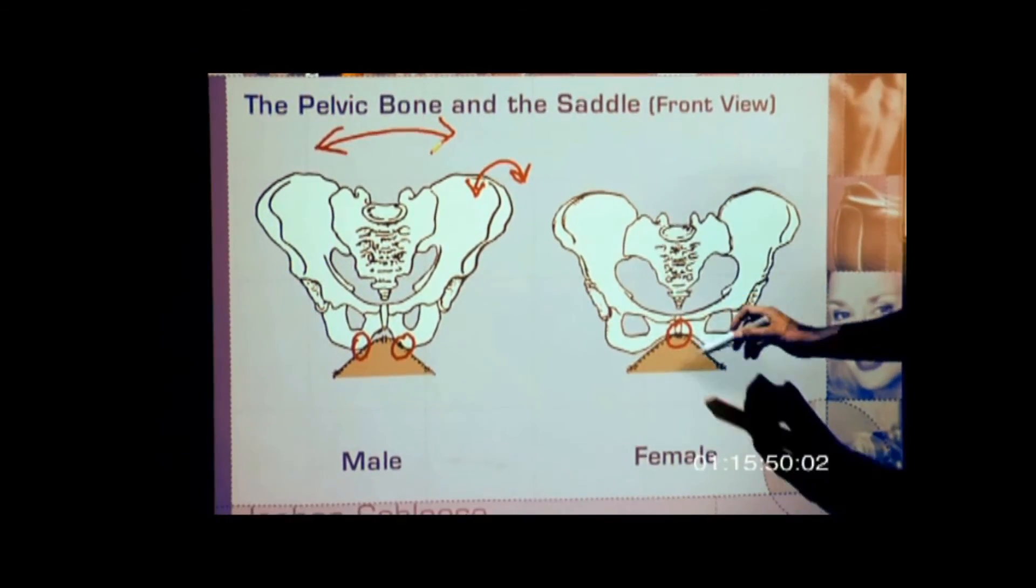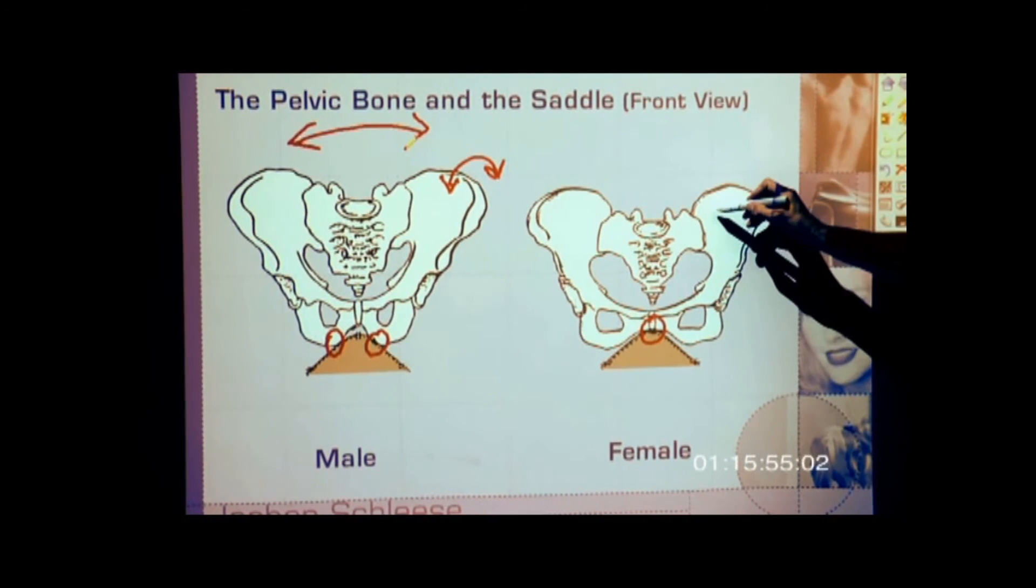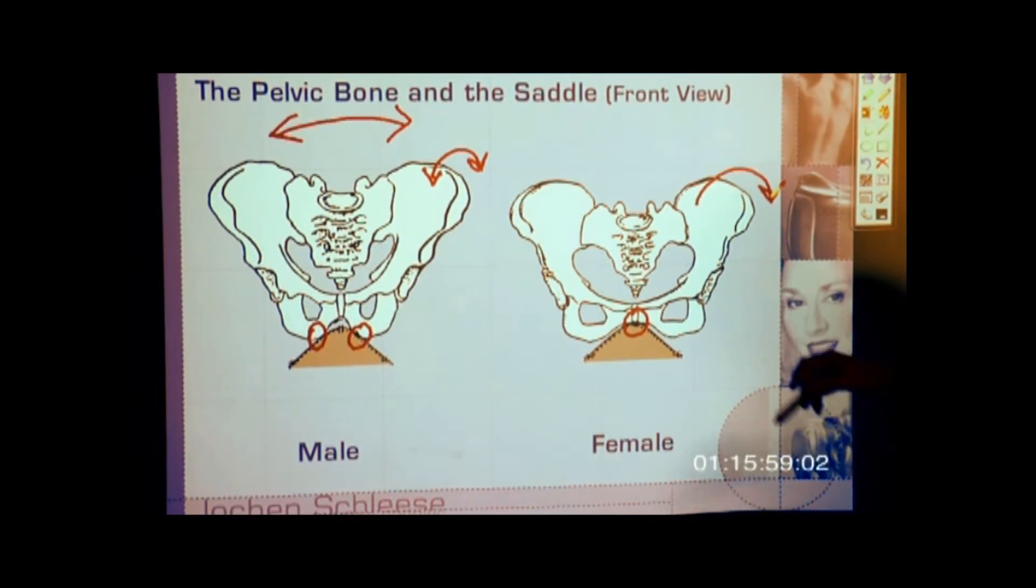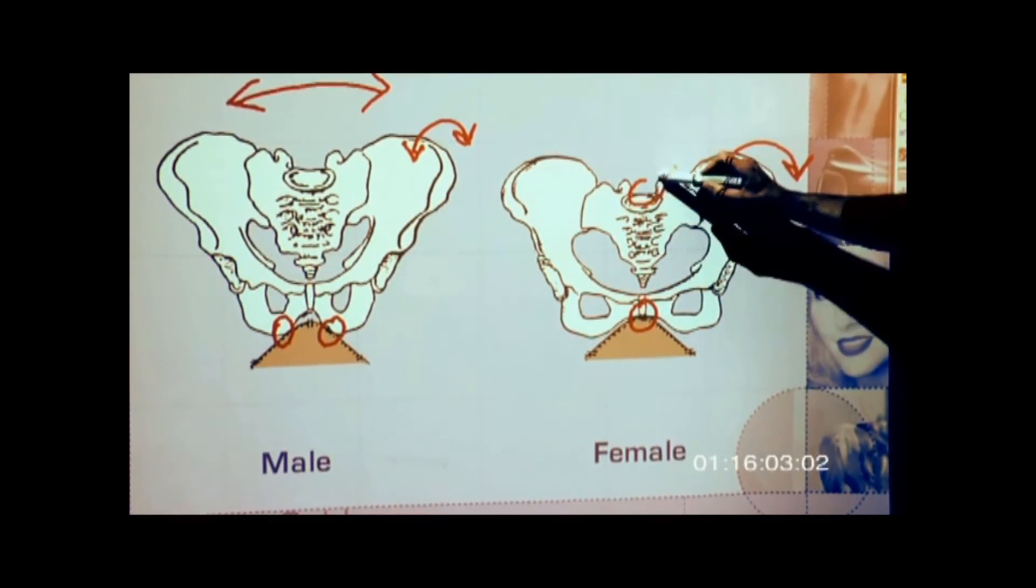If I look at this particular picture, the female riding in the male saddle, the lady would automatically protect herself, roll back would get really stiff here.